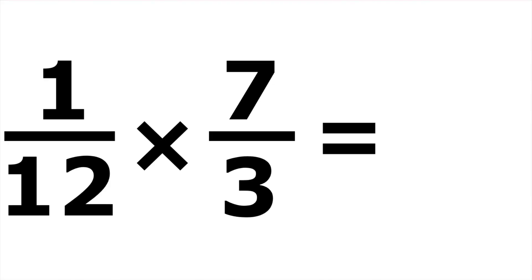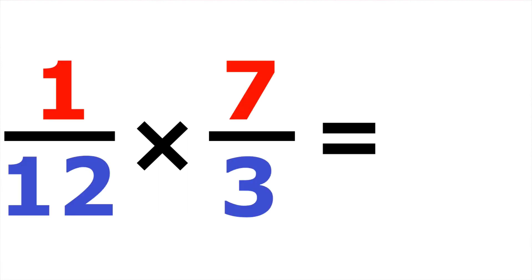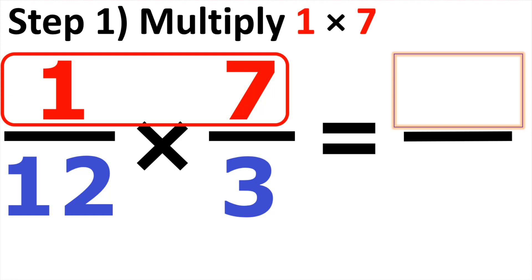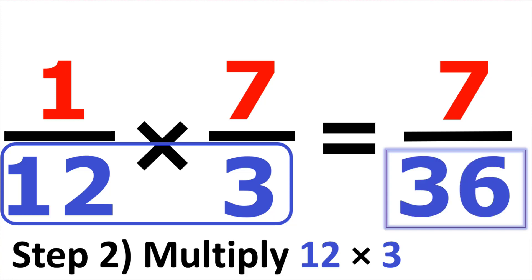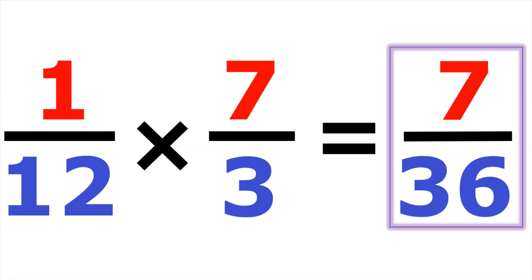Number nine, we have one over twelve times seven over three. Multiplying straight across, we have one times seven, which is equal to seven. Looking at the denominators, we have twelve times three, which is equal to thirty-six. So the answer is seven over thirty-six.